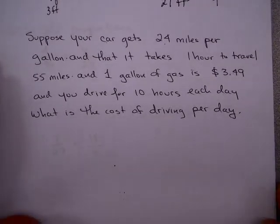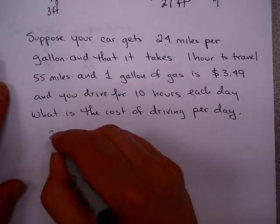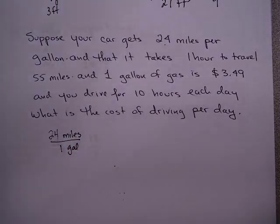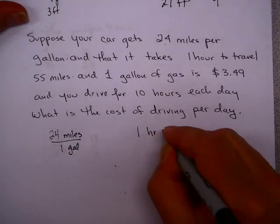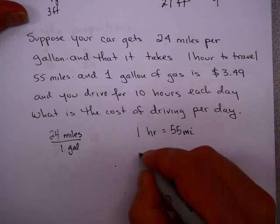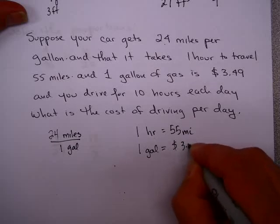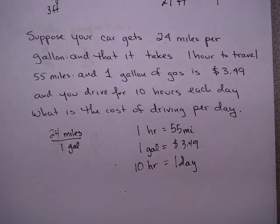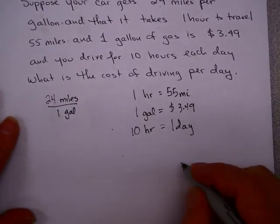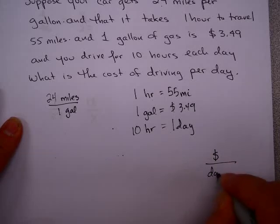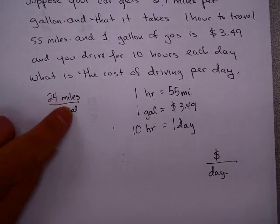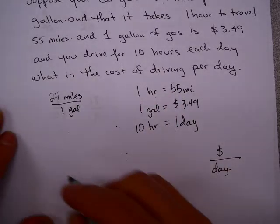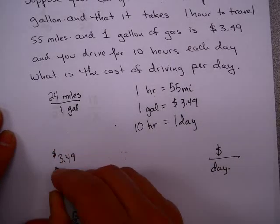Here's another unit analysis problem, maybe a little more practical and interesting for you. Suppose your car gets 24 miles per 1 gallon of gas, and that it takes 1 hour to travel 55 miles. So I'm going to write that down: 1 hour equals 55 miles. And 1 gallon of gas is equal to $3.49. And you drive for 10 hours each day. What is the cost of driving per day?